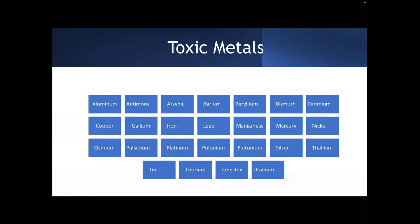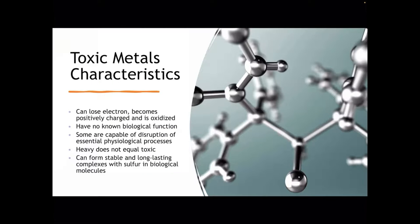The toxic metals are just that — they are toxic. Even in small amounts they can become extremely toxic. Toxic metal characteristics: they can lose an electron, become positively charged, they're oxidized, they have really no biological function. For a toxic metal — not a heavy metal — we do not have any good use in human nutrition for its addition to our daily eating habits. They can and do disrupt essential physiologic processes. Heavy metal is not necessarily a toxic metal — it's very different.